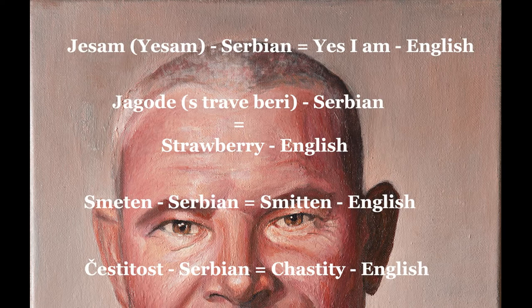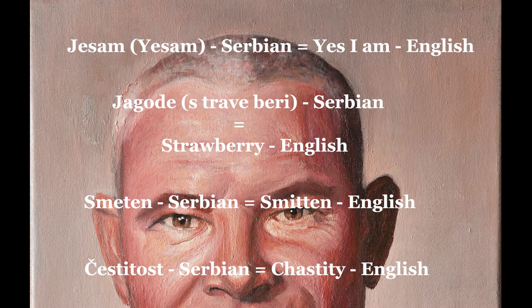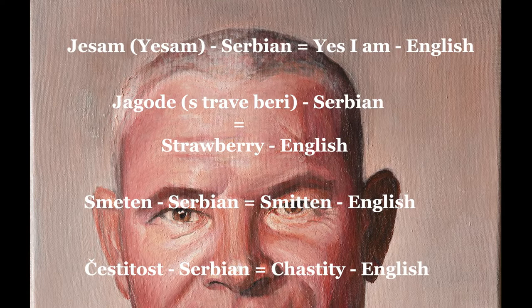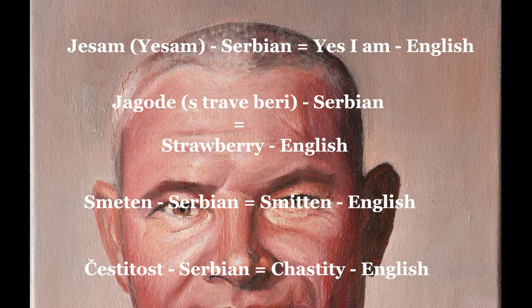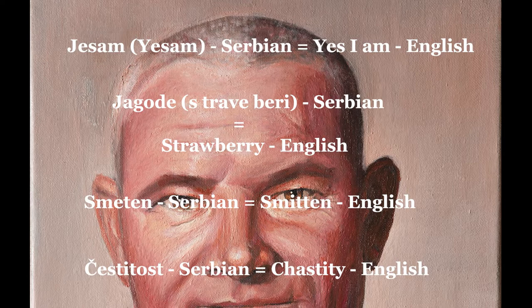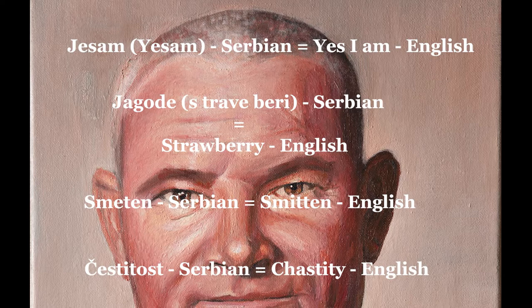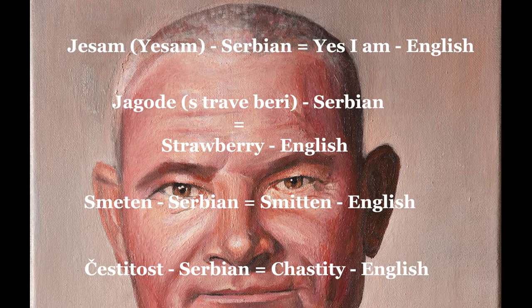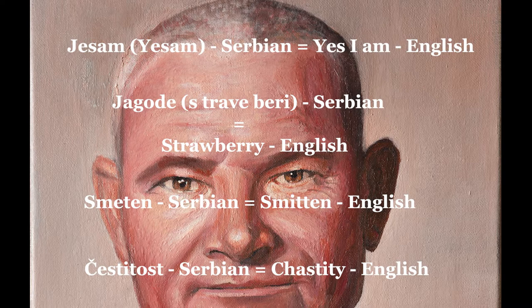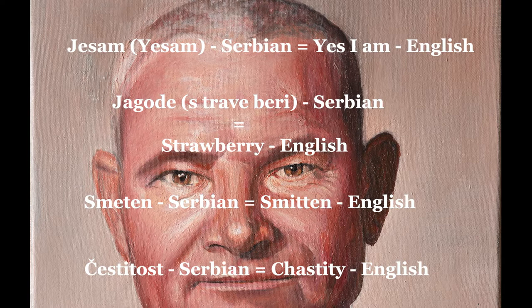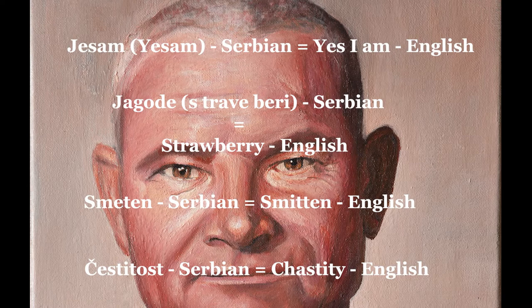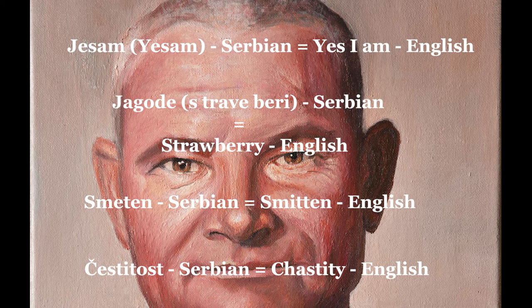The Serbian word 'yesam', an affirmative for a person acknowledging something, is the origin of the English 'yes I am.' So if somebody asks me 'Are you Milan?' I would say 'Yes I am' — 'yesam', 'ja sam', I am Milan, exactly the same. 'Jagode' or 'jagoda' (singular) is strawberry. In English, the way it's written down is in Serbian 's trave beri', meaning 'pick them from the grass', as we know strawberries bloom low on the grass. 'Smetan' in Serbian is 'smitten' in English — absolutely identical meanings, but it can only be explained in Serbian language if we break down the word.